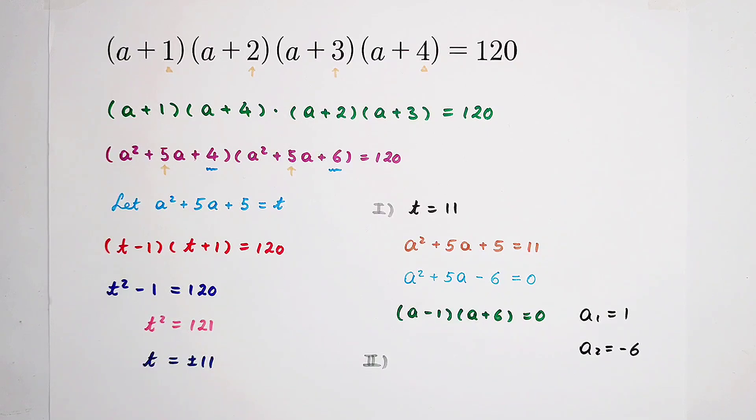In the second case, if t is negative 11, we also get an equation. Of course, it is this: a squared plus 5a plus 5 is negative 11. And you can get a squared plus 5a plus 16 equals 0.